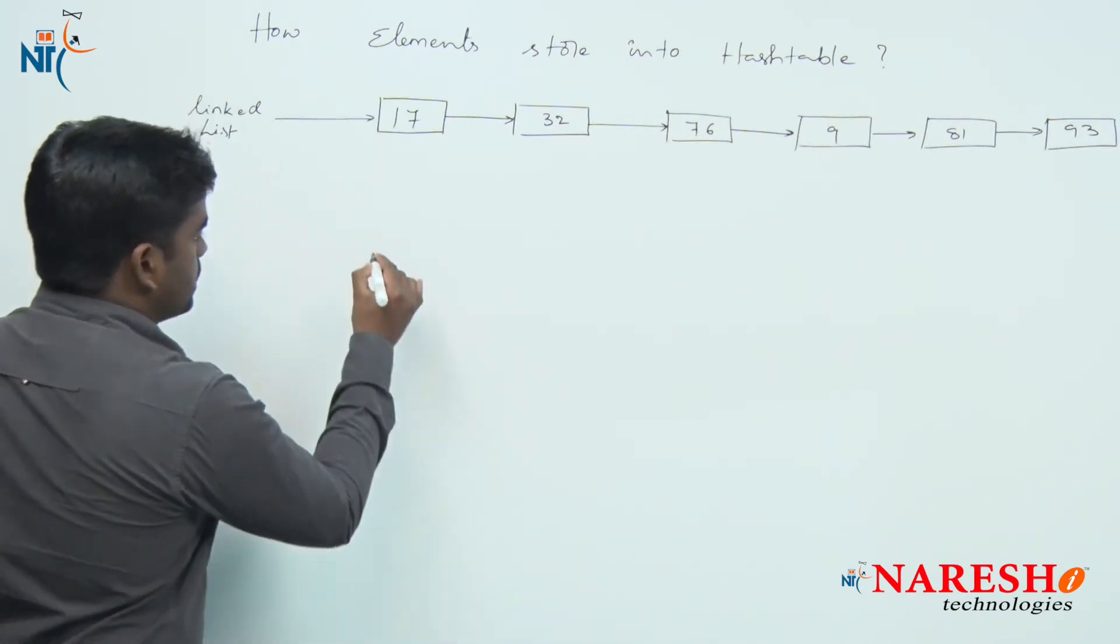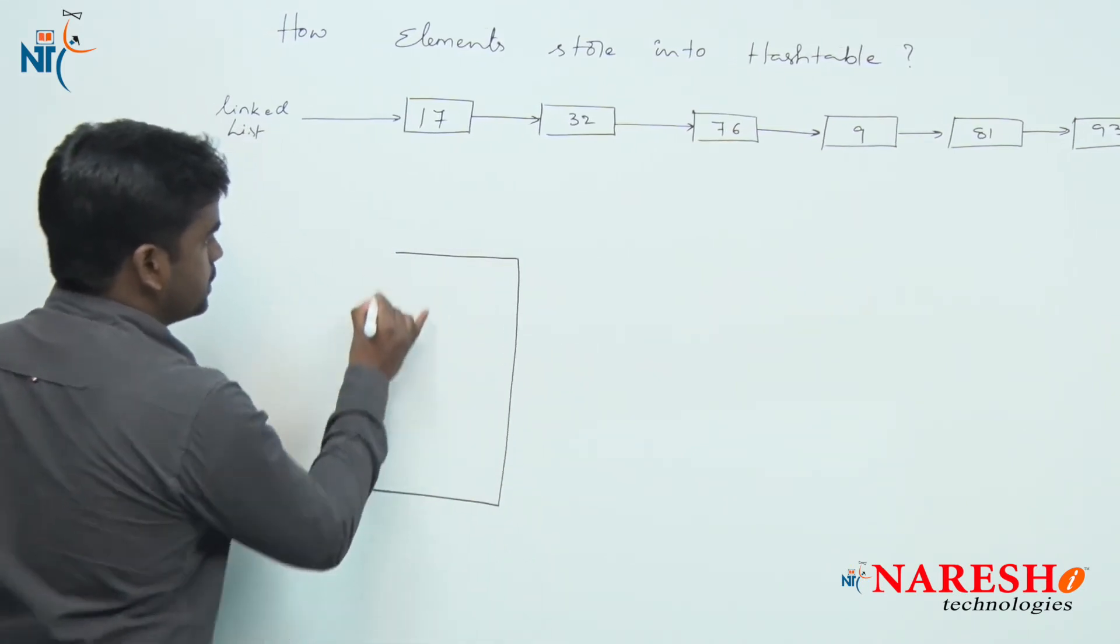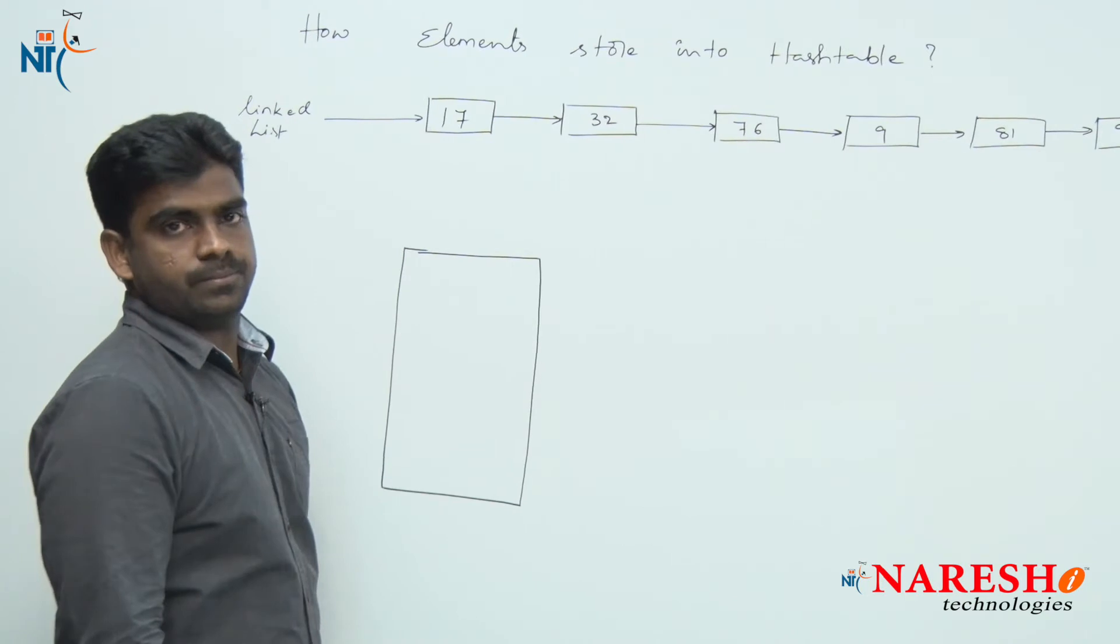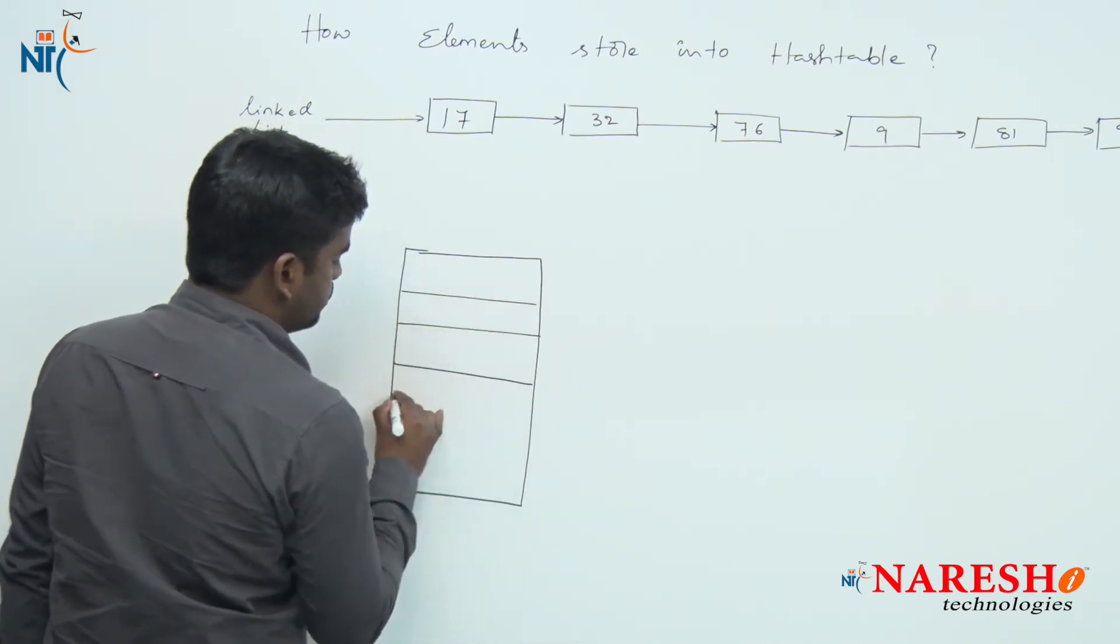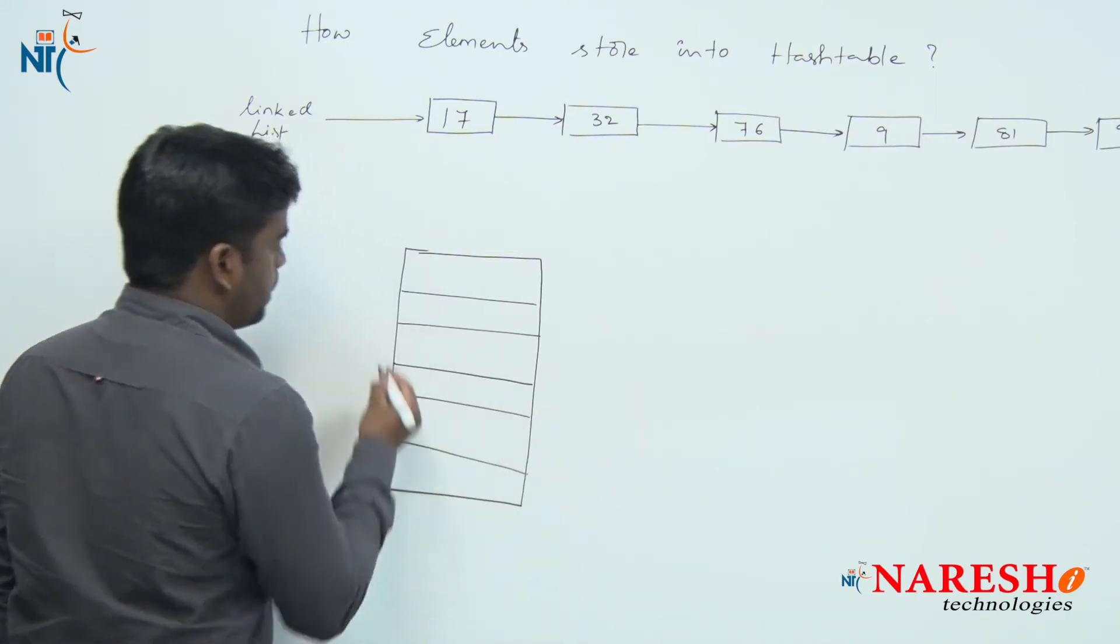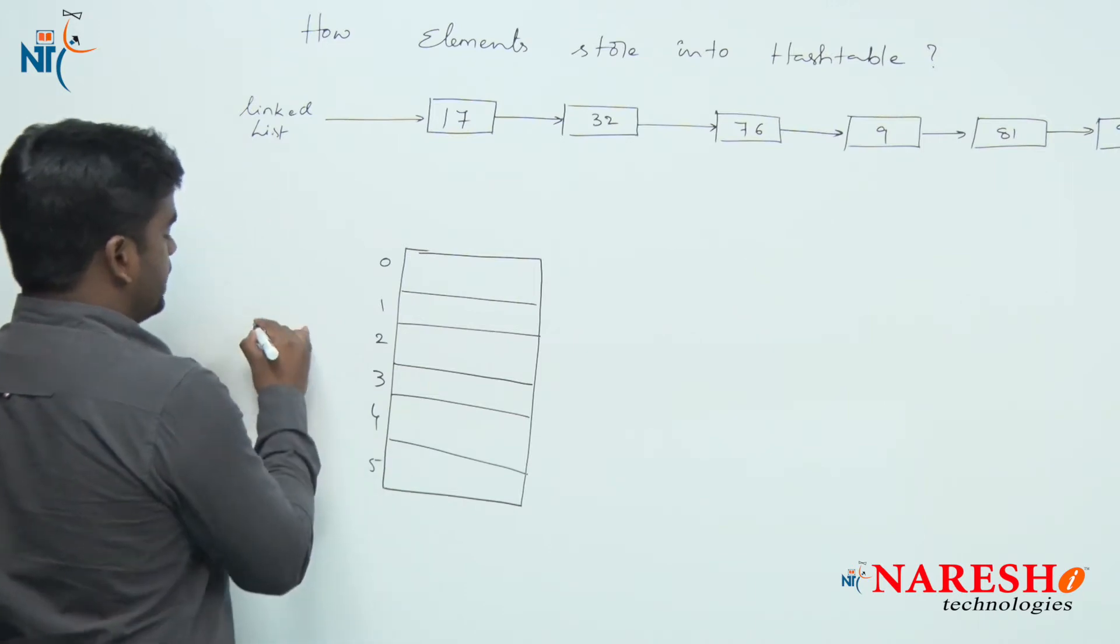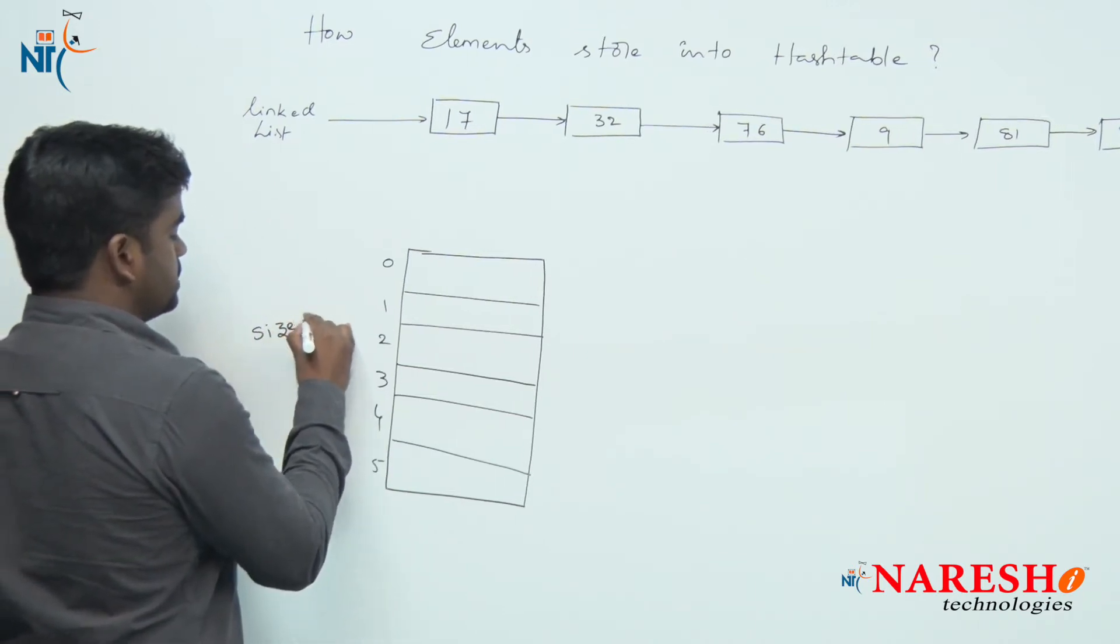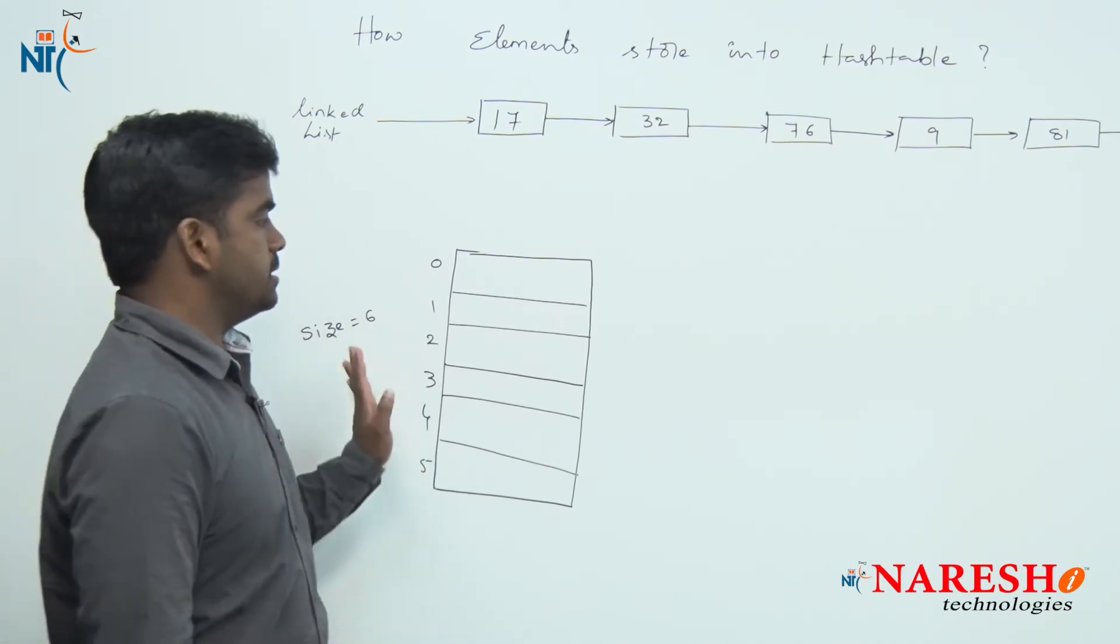Suppose in a hash table, we are maintaining the hash table with a particular size. Here, just to explain, I am taking the size is 6. The index just like array and hash table size is 6.